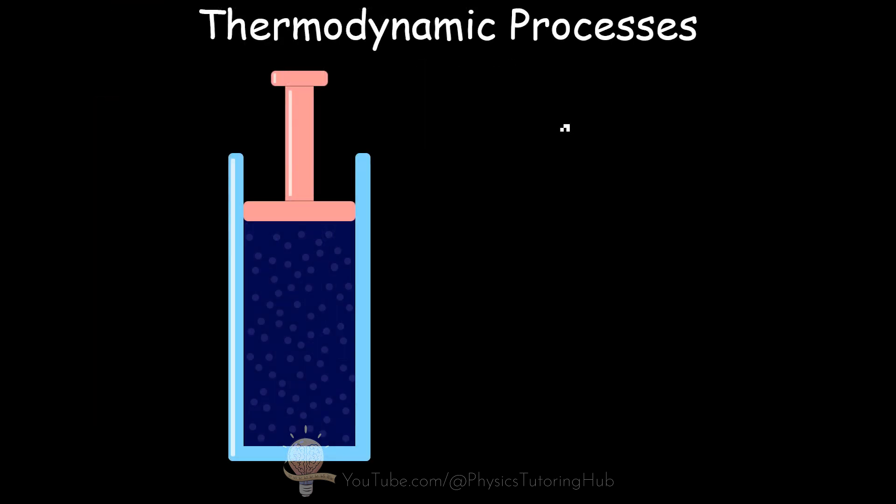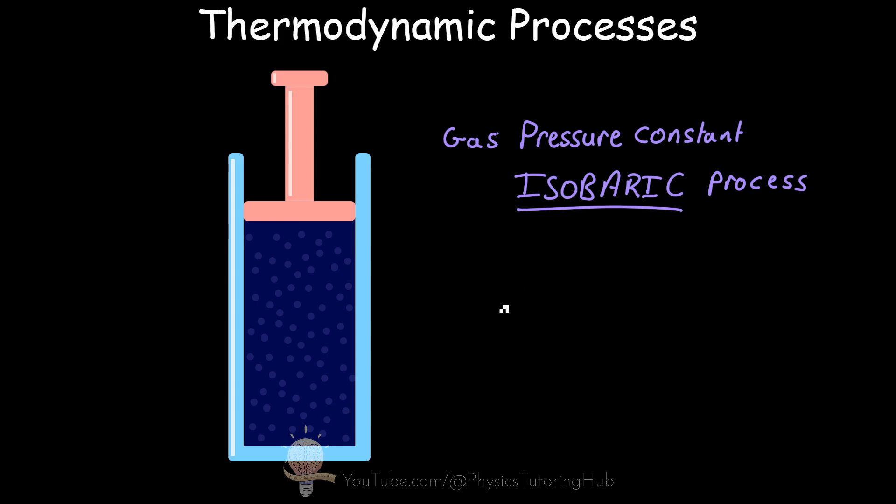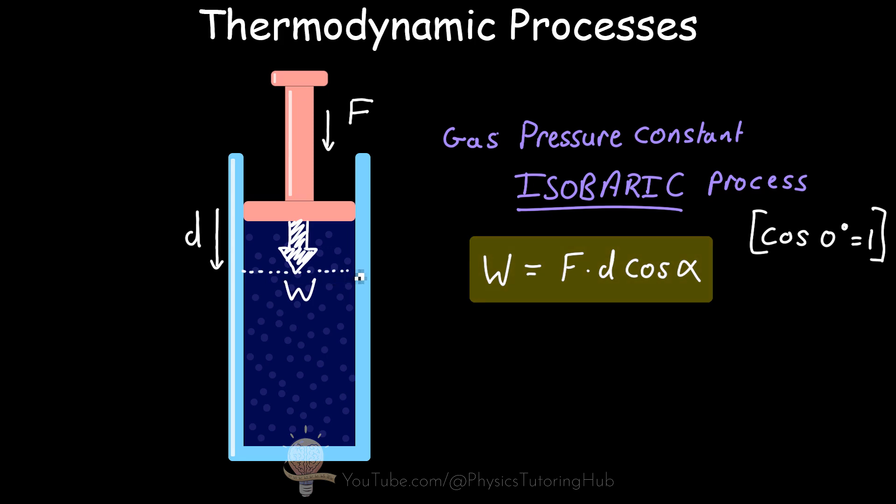First, we're going to look at how to calculate the work done on or by a gas when the gas pressure remains constant. Now this kind of thermodynamic process is called an isobaric process. And it's fairly easy to calculate the work done on a gas or by a gas when the pressure of the gas remains constant. So in the previous lesson, we discovered that the work done on objects is equal to the force applied to the object over some displacement D. But because we're working with pressure and changes in volume for our cylinder or gas, we need to rewrite this equation to fit this particular circumstance.